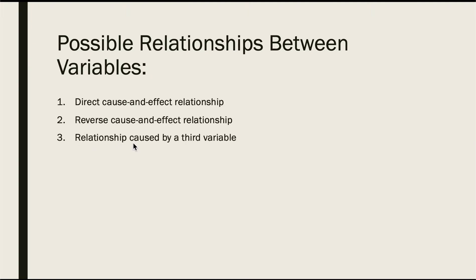Third is relationships caused by a third variable. The relationship between the variables may be caused by a third variable. One example is a significant relationship between the number of deaths due to drowning and the number of cans of soft drinks consumed daily during summer. However, the soft drink is not necessarily responsible for the deaths since both variables may be related to heat and humidity — so it may be caused by a third variable.